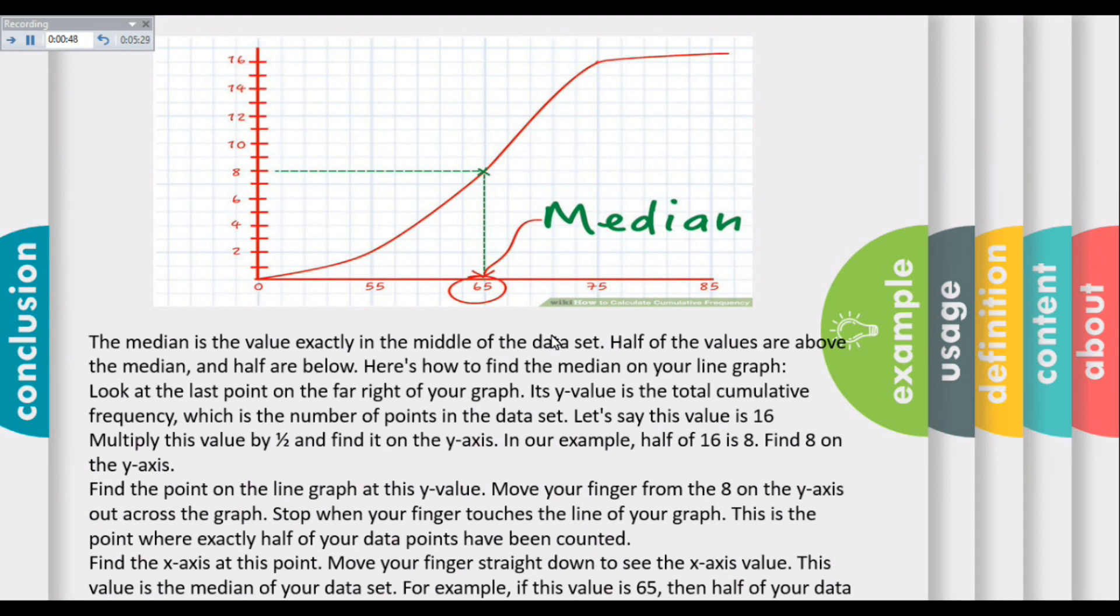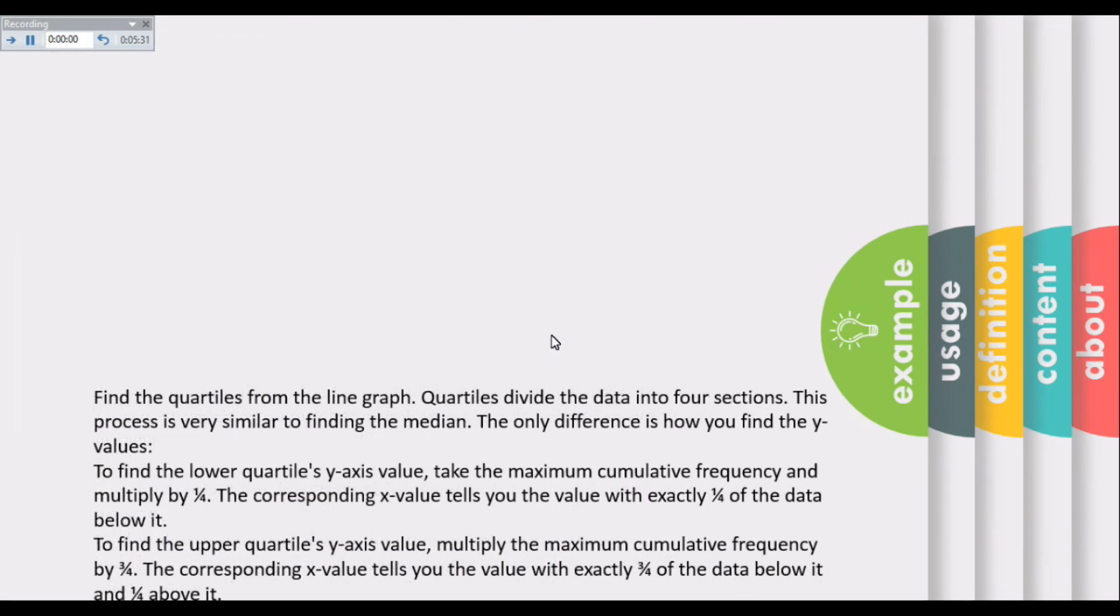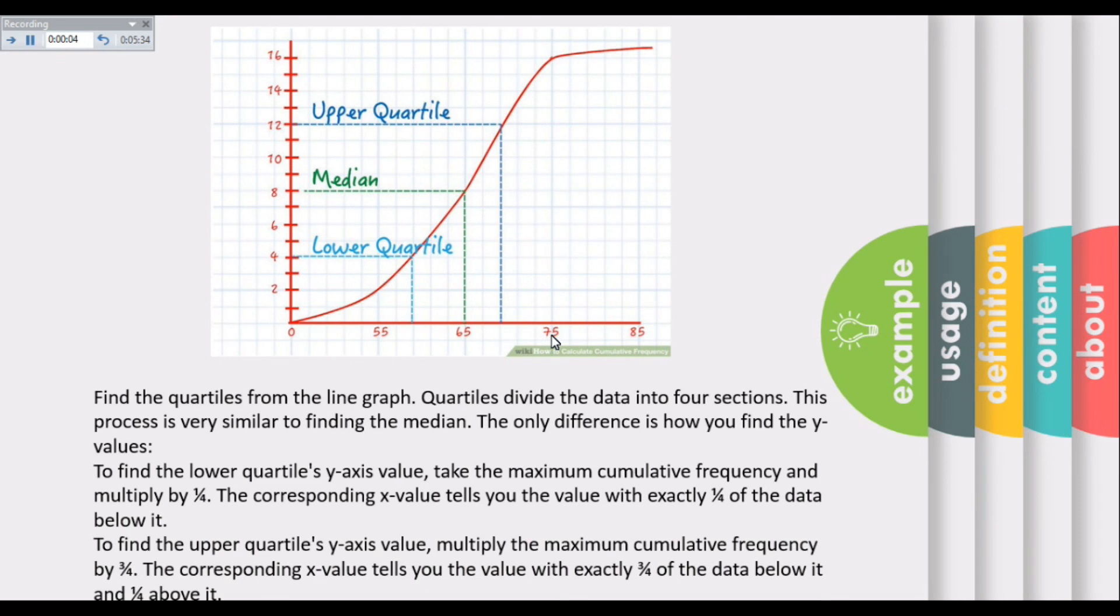Now find the quartiles from the line graph. Quartiles divide the data into four sections. This process is similar to finding the median, but it varies in finding the y-value.